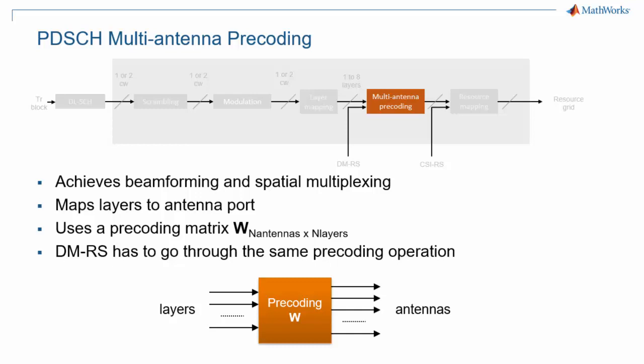One key aspect of precoding in 5G is that the associated demodulation reference signals, or DMRS, must undergo the same precoding. As a result, the UE doesn't need to be made aware of the precoder, as the effect of the precoder is included in channel estimation. This is why the exact precoder the gNodeB is to use is not specified in the standard.